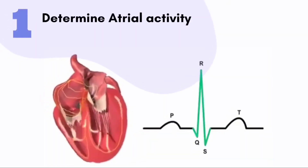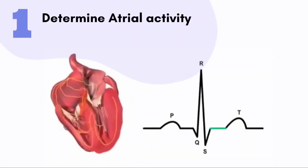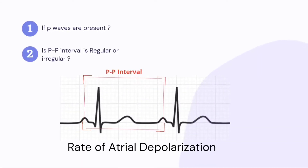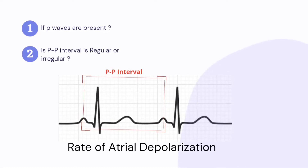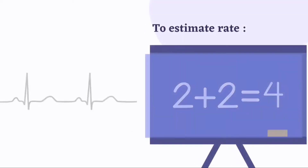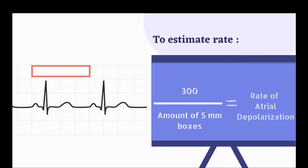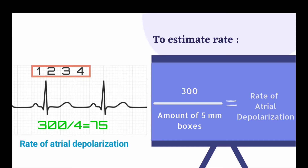The first step in determining rate and rhythm is to spot atrial activity. If P waves are present, it's important to determine the P wave to P wave interval, or PP interval, which determines the rate of atrial depolarization. To quickly estimate an atrial or ventricular rate on a typical 12-lead ECG, count the number of 5-millimeter boxes in an interval and divide 300 by that number. For example, if there are four boxes between P waves, the rate is 300 divided by 4, which equals 75 complexes per minute — the rate of atrial depolarization in this case.